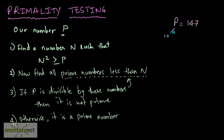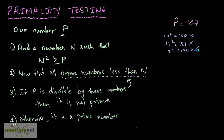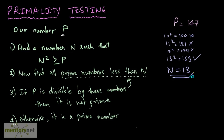10² is 100 and 100 is less than 147, so it's not going to work. 11² is 121, so it's not going to work either. 12² is 144, also not going to work because it's less than 147. And 13² is equal to 169, which is greater than 147. So 13 is our n — n equals 13.